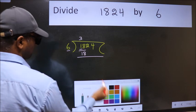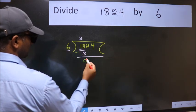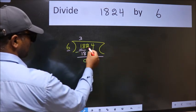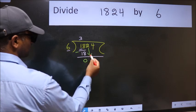Now we should subtract. We get 0. After this, bring down the beside number. So 2 down.